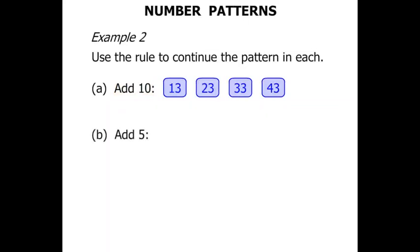The next one we need to add 5 this time. So we know the first number is 52. So 52 plus 5 is 57. 57 plus 5 is 62. And 62 plus 5 is 67.